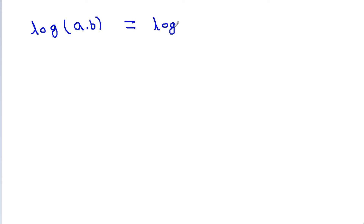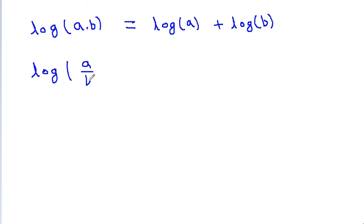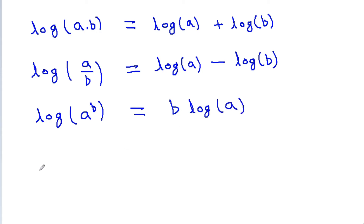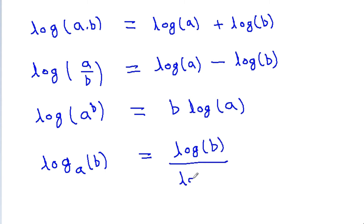The first formula is: log of a times b is equal to log a plus log b. The second formula is: log of a divided by b is equal to log a minus log b. The third formula is: log of a to the power b is equal to b times log a. And the fourth formula is: log base a of b is equal to log b divided by log a.